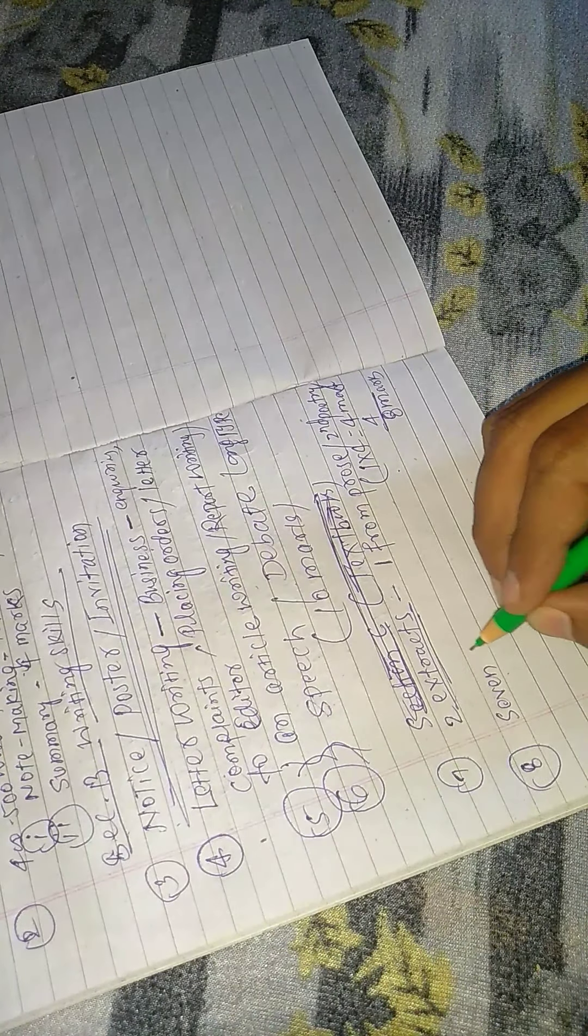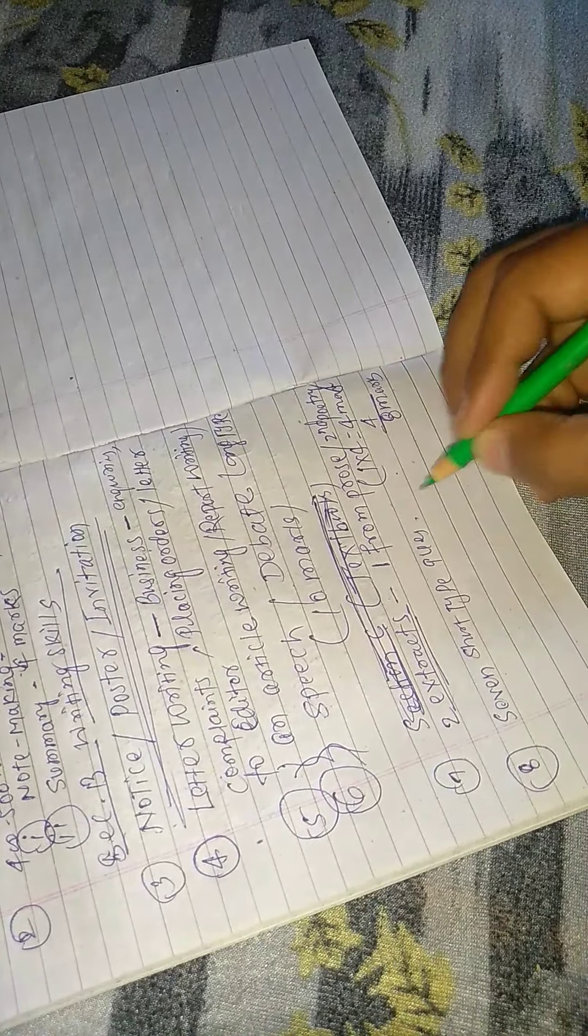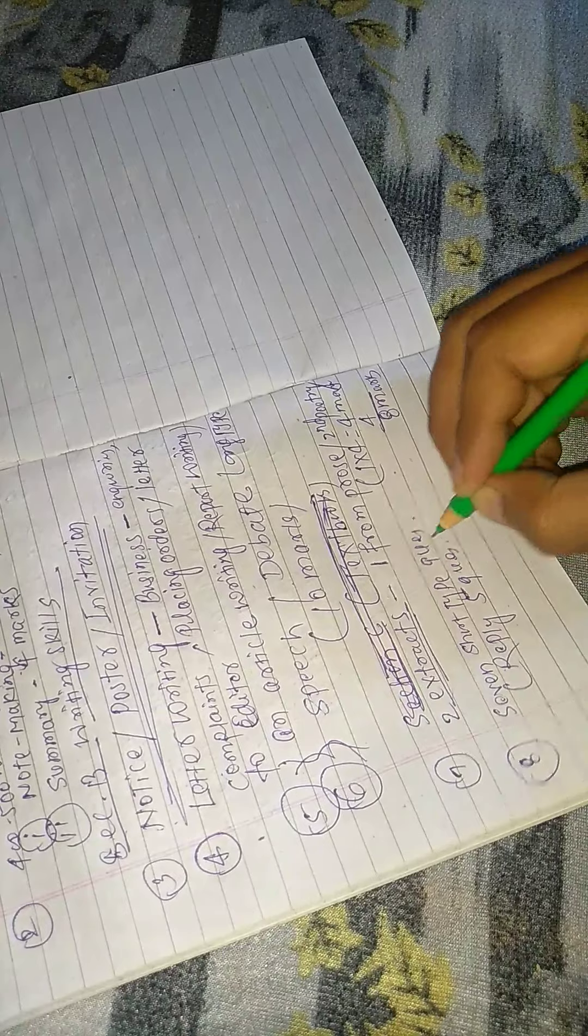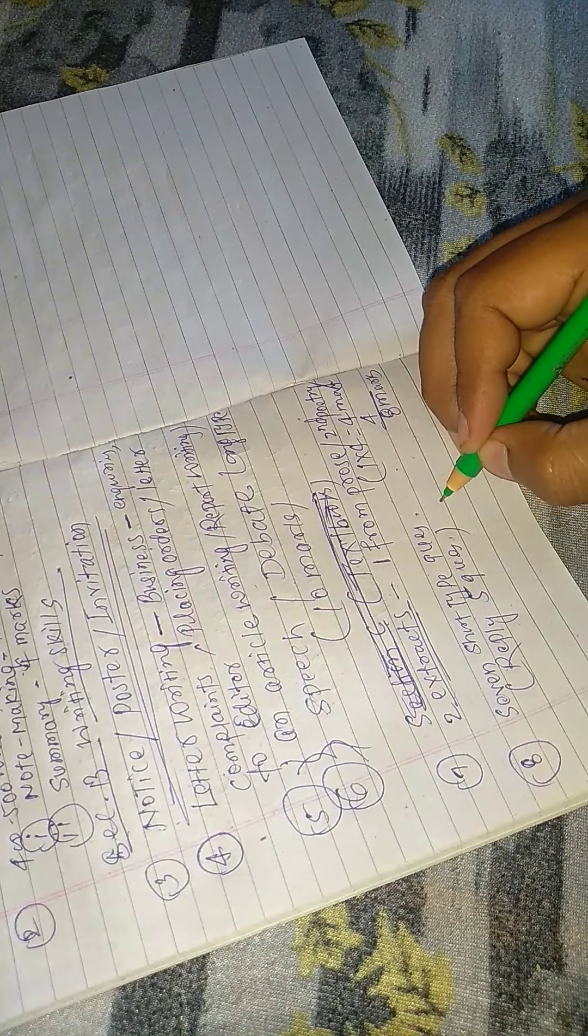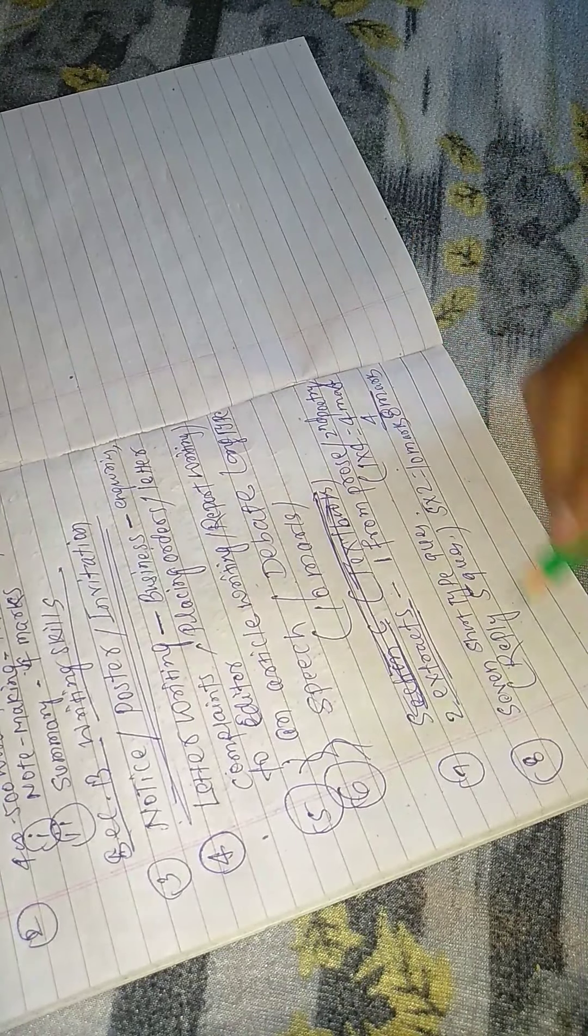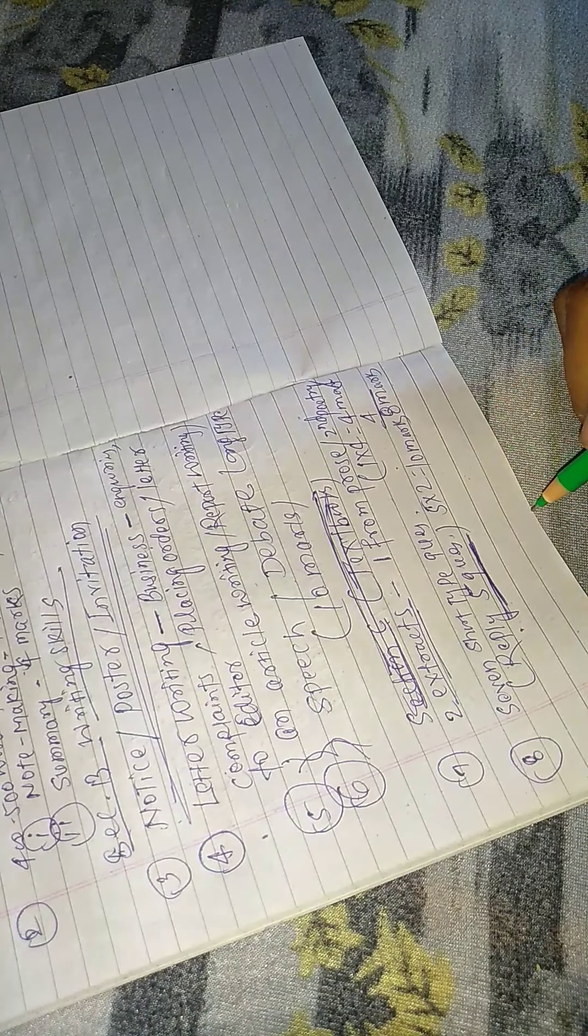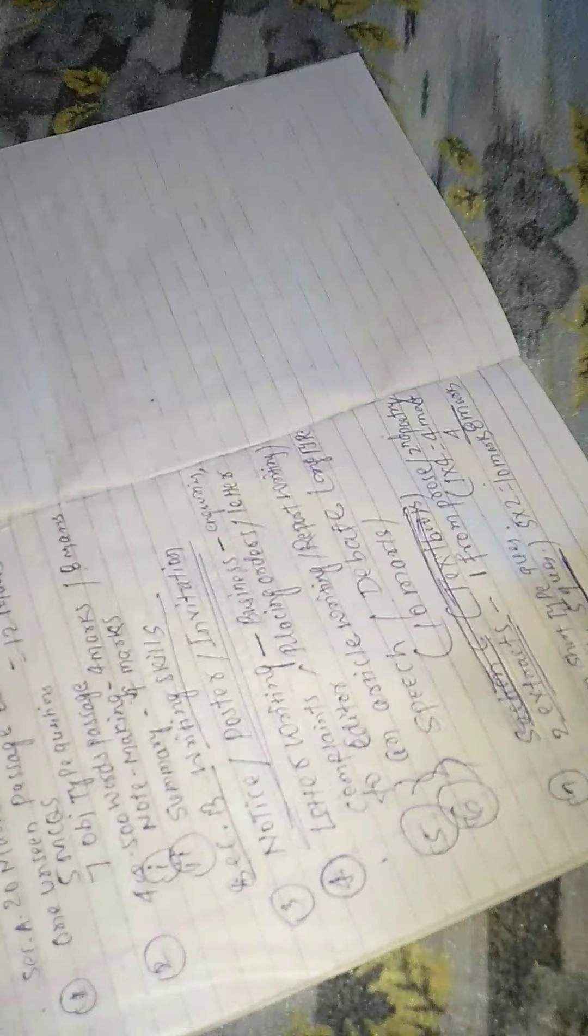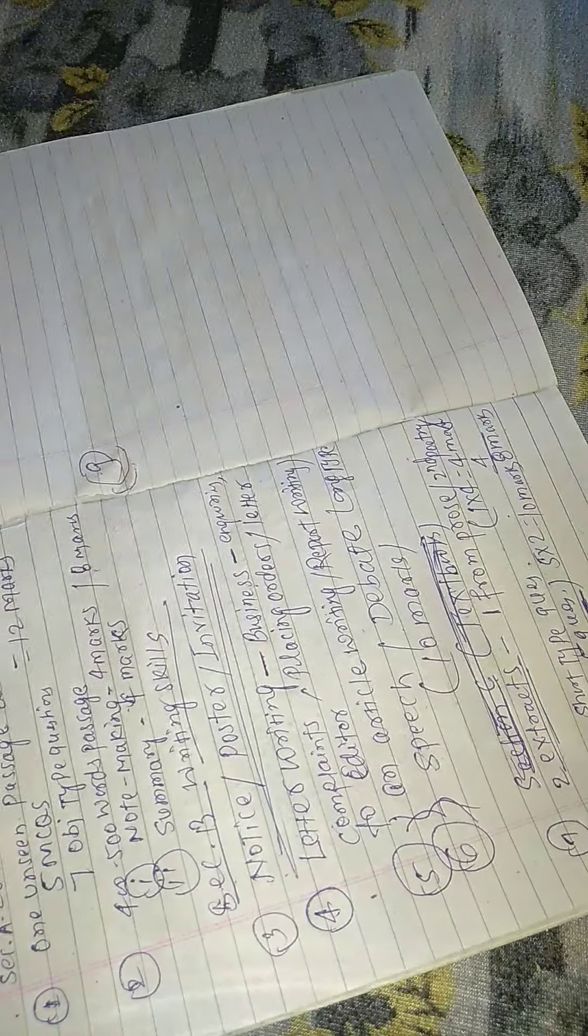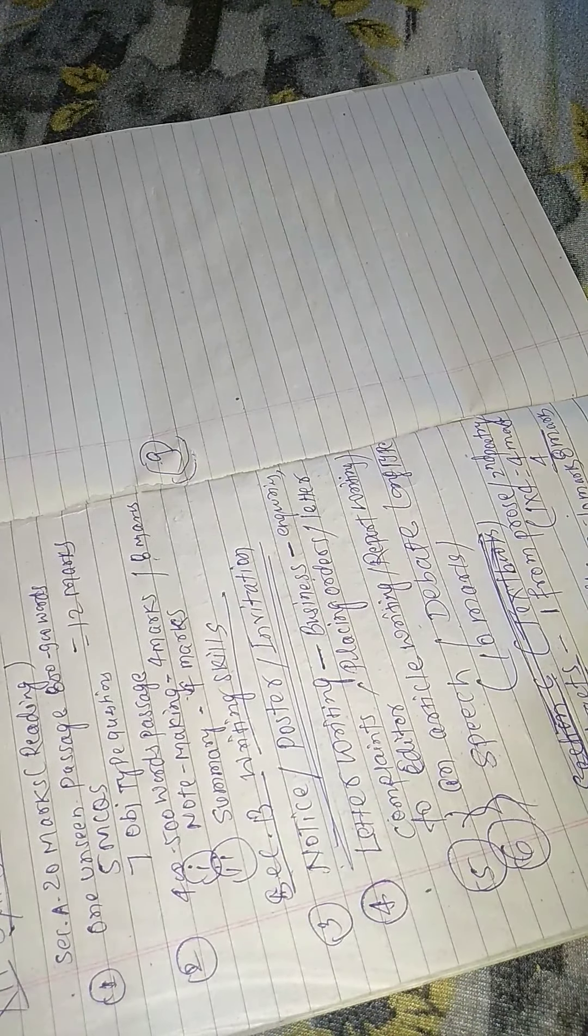Eighth number: short type questions will be asked. Seven short type questions will be asked, you have to reply five questions. So this is short answer type: five into two marks, seven questions and reply five, will be five into two equals ten marks.